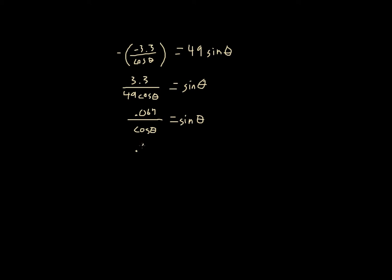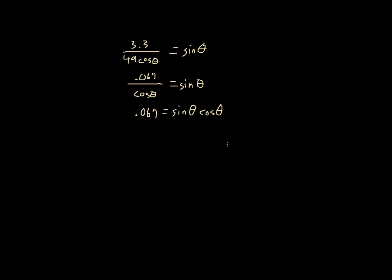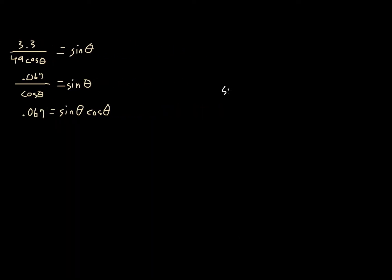If we rearrange this a little bit, we're left with 0.067 equals sine theta times cosine theta. Now, how do we solve for theta? Well, in pre-calculus we learn about trig identities. What it basically says is: sine 2 theta is equal to 2 times sine theta times cosine theta.